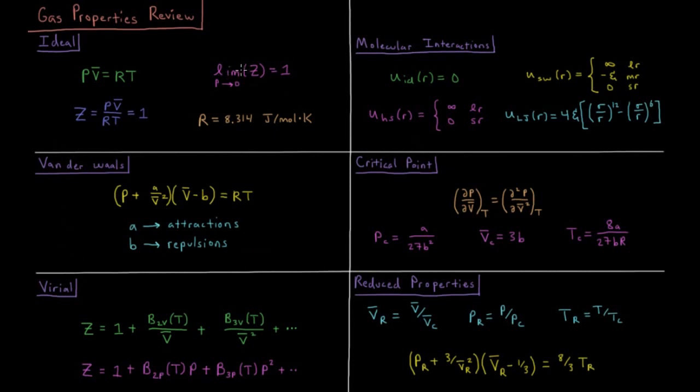This becomes true for all gases in the limit as the pressure approaches zero, as the gas becomes infinitely dilute with very low pressure and very high molar volume. And of course the value of the gas constant is 8.314 joules per mole Kelvin.